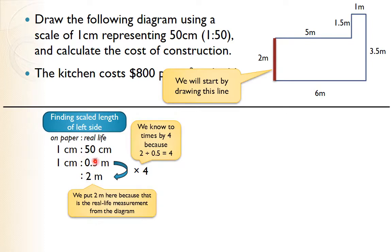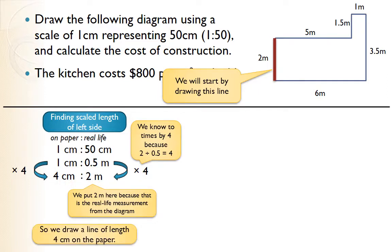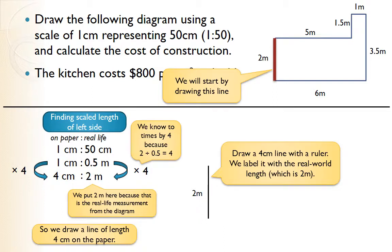To get from the scale row to the measurement row, we multiply by 4. If we do it to one side we do it to both sides, so: 1 centimeter times 4 equals 4 centimeters. Two meters in real life is four centimeters on paper — draw a line of four centimeters with a ruler. Notice we label it with the real-world measurement of two meters, not the paper measurement, because someone reading the diagram wants to know the actual size in the real kitchen.